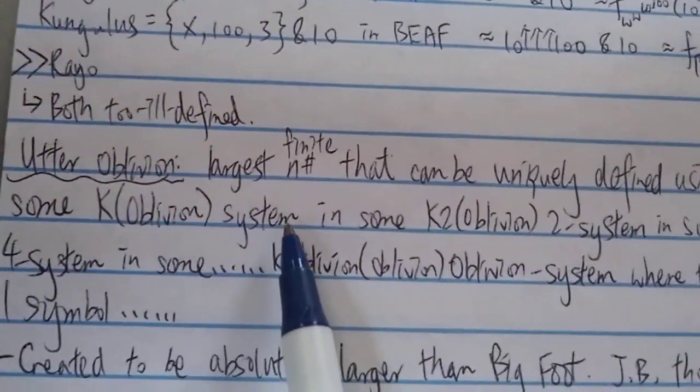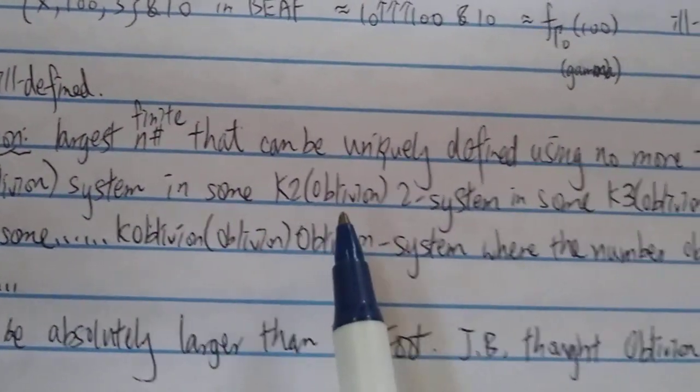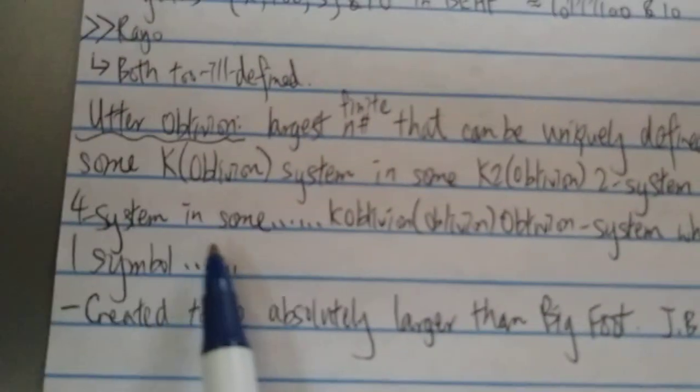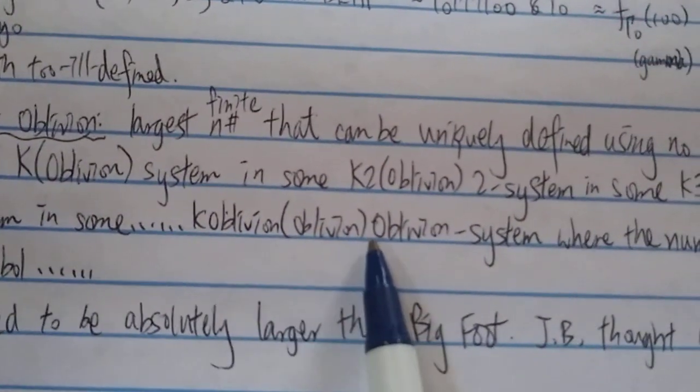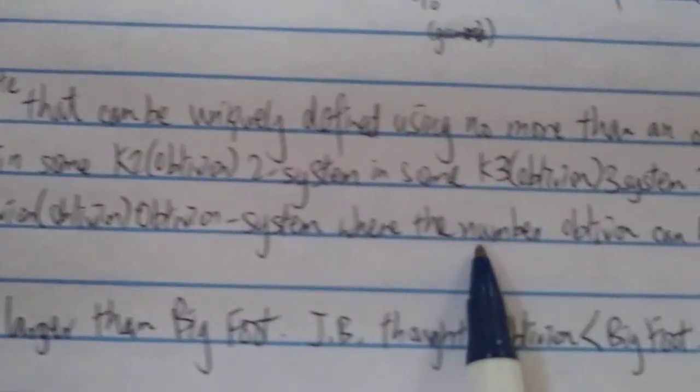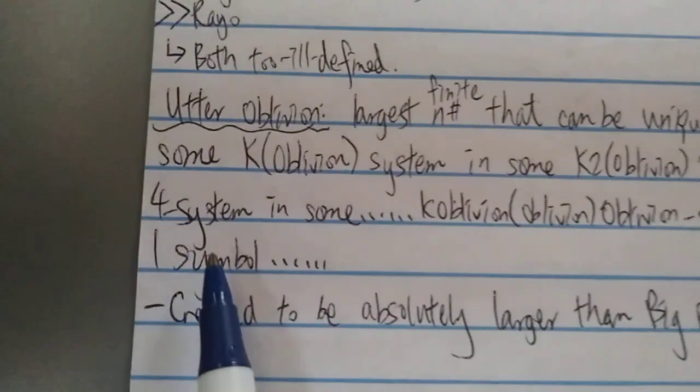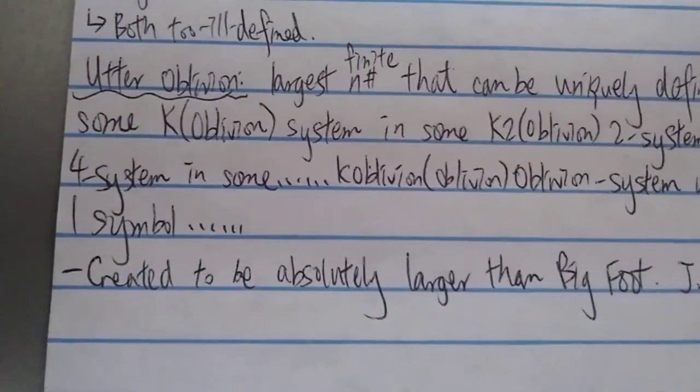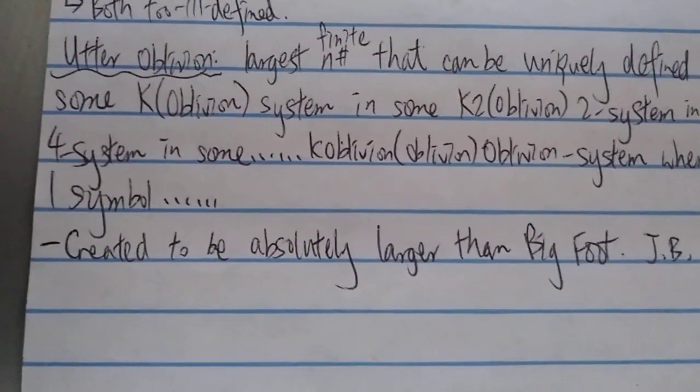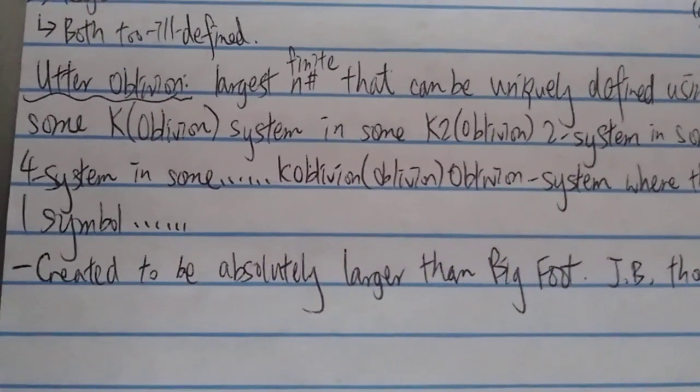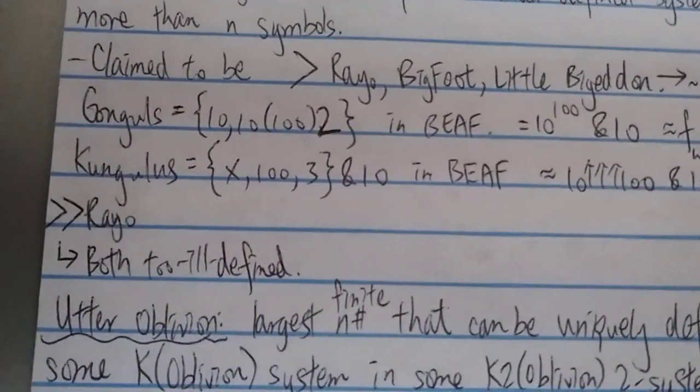In some K-oblivion system, in some K-2 system, some K-3 system, some K-4 system, and blah blah blah oblivion system where the number oblivion can be represented with just one symbol. So you can read that yourself on the Wikipedia page, but basically it's a - you can kind of say it's a naive extension of the oblivion number.